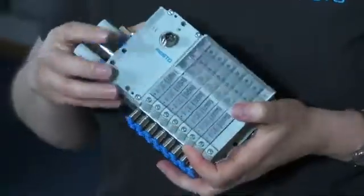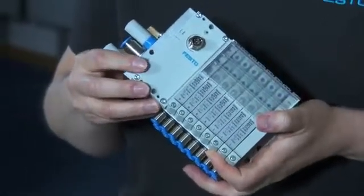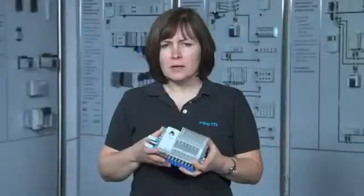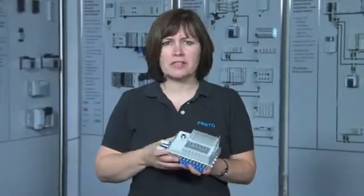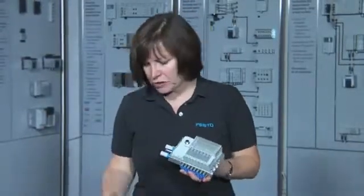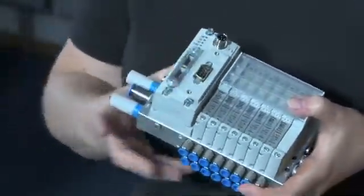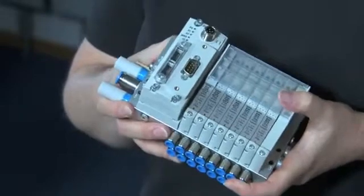And then of course we have communication networks. With our innovative connection method using IO-Link, an industry standard point-to-point network, we can connect directly to any IO-Link master. But if you would prefer a field bus or industrial Ethernet network, just put the correct module on top of the IO-Link port, like this, and it becomes a field bus or Ethernet valve terminal.